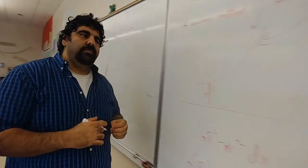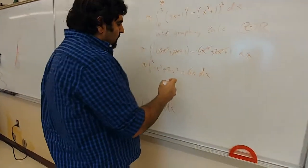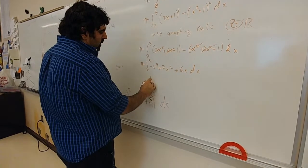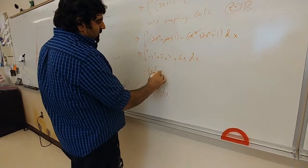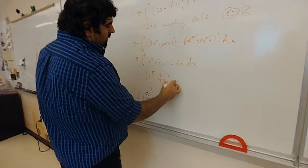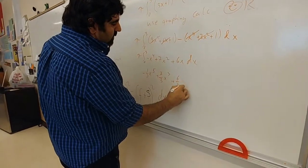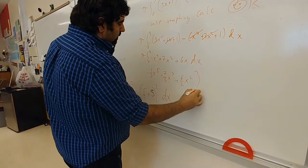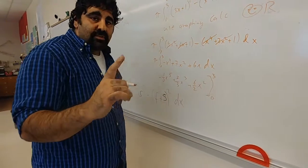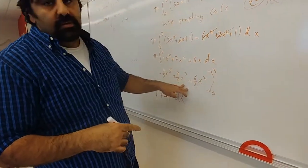Doing my integral, this right here would be negative one-fifth x to the fifth, this one will be 7 over 3 x to the third, and that will be 6 over 2 x squared, and then you just plug in 3 and 0.